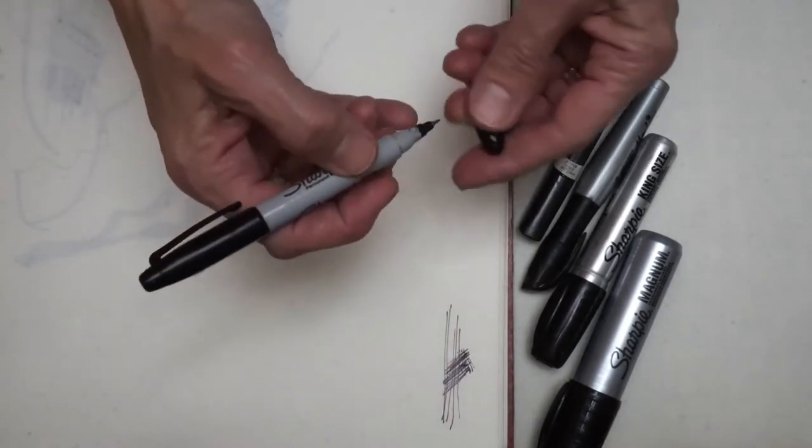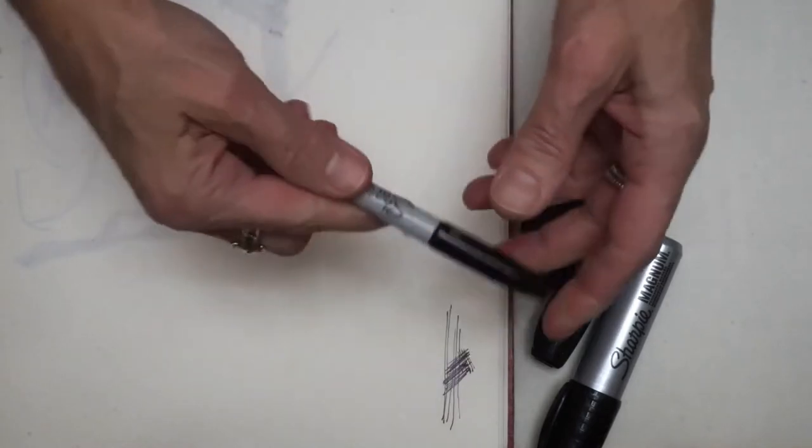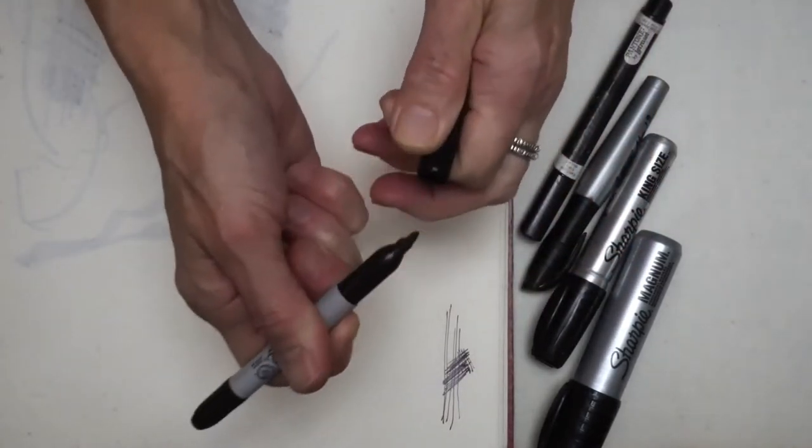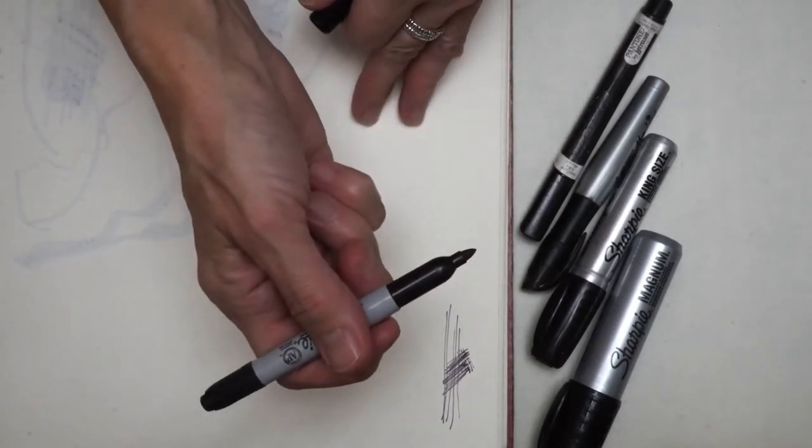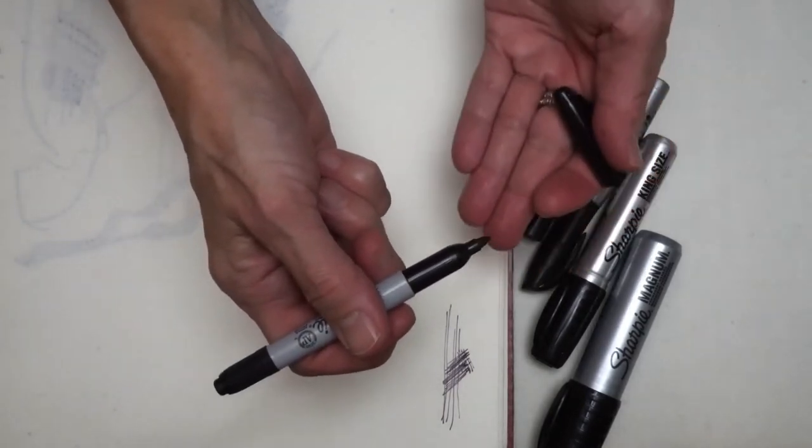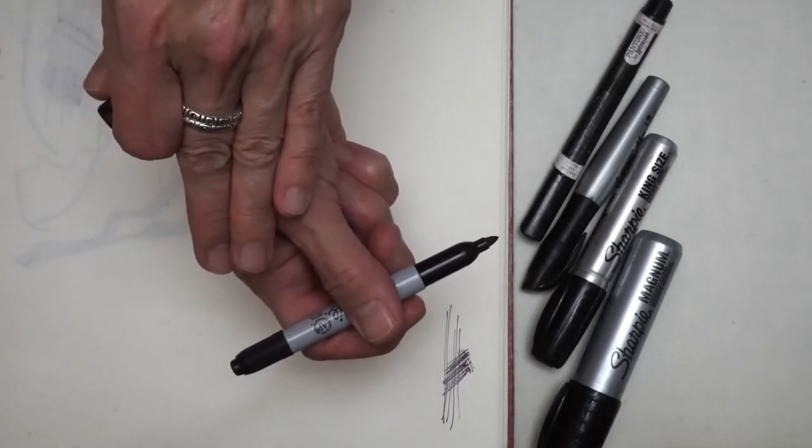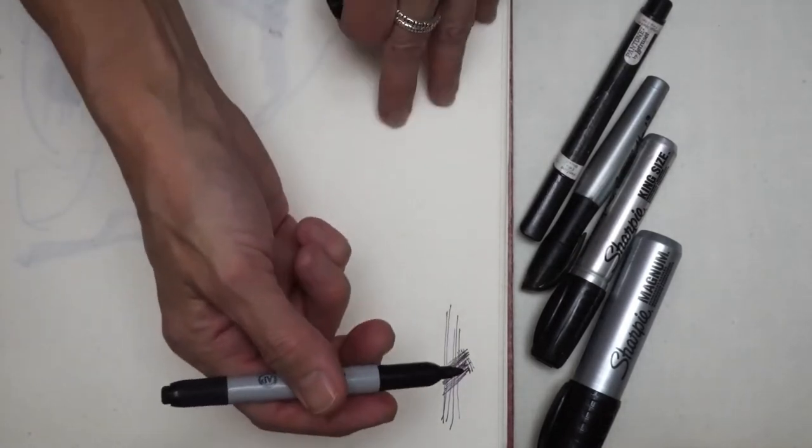On the other end of this particular marker I also have a fine tip. Handy to have two tips in one, although you can also get the markers in just plain fine tip or just plain ultra fine, and of course in a variety of colors as well.